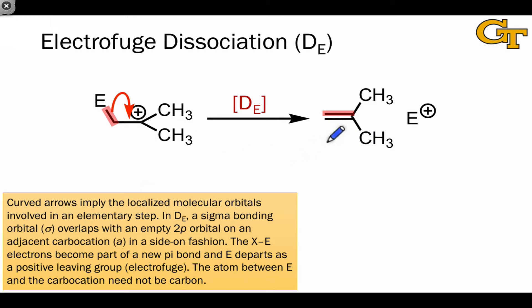Notice here again that D sub E in reverse is A sub E, or association of an electrophile. This is analogous to the nucleophile-nucleofuge situation that we looked at in a previous pair of videos.